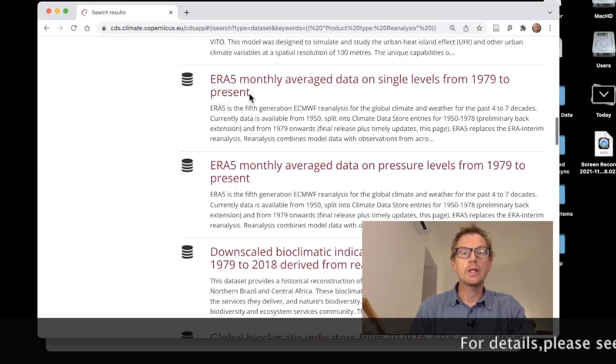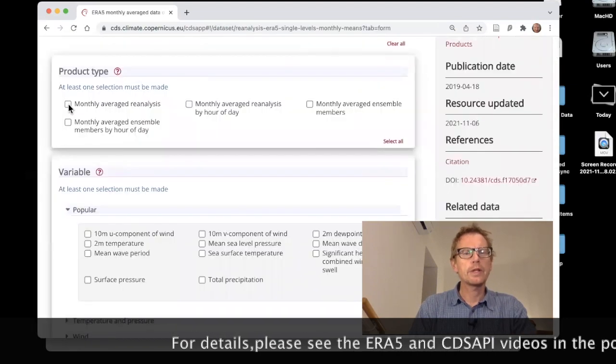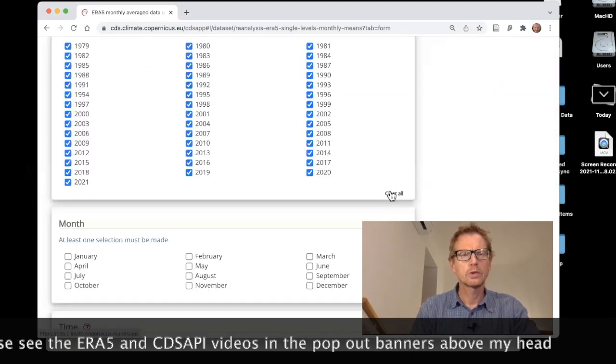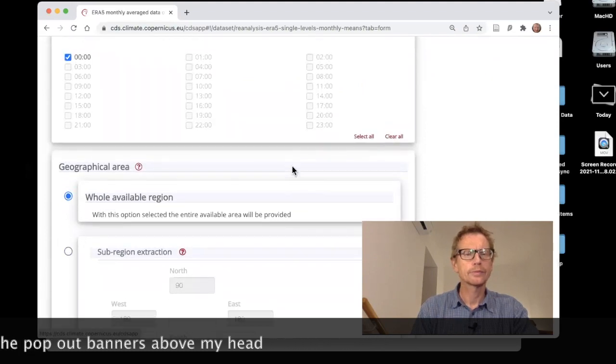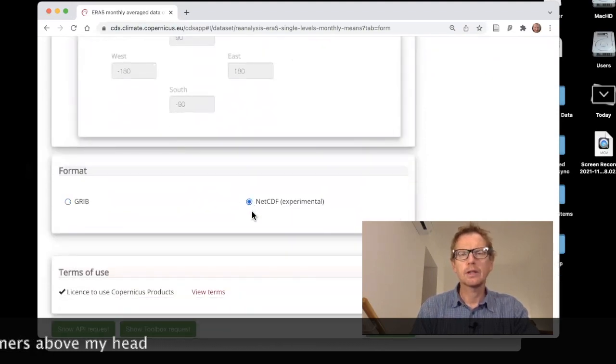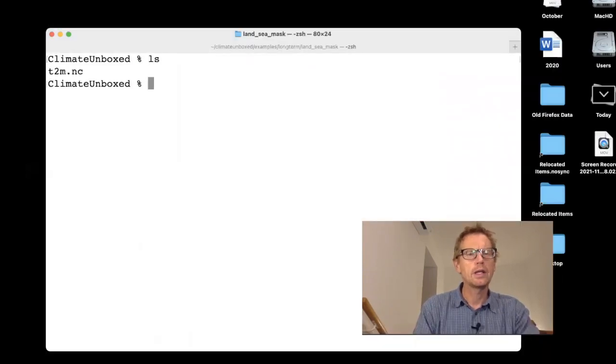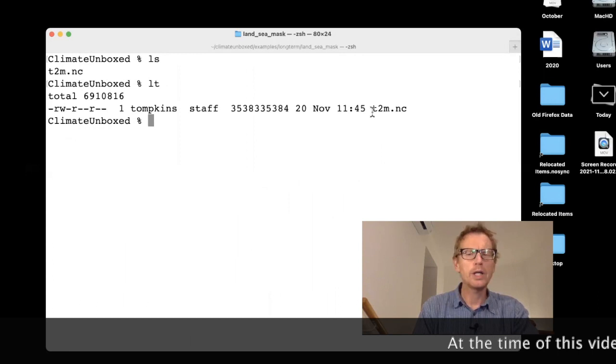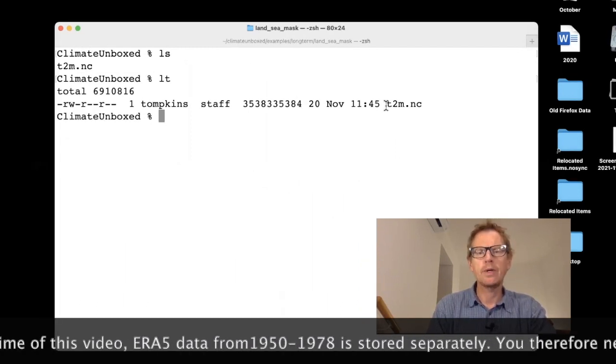So let's see this put together. What we're going to be using is the ERA5 monthly average data on a single level. So we're going to be using the monthly average reanalysis, the two meter temperature, all of the years and all of the months. And we're going to select NetCDF. Here's the API request. So I've done it here. And here's the file results.